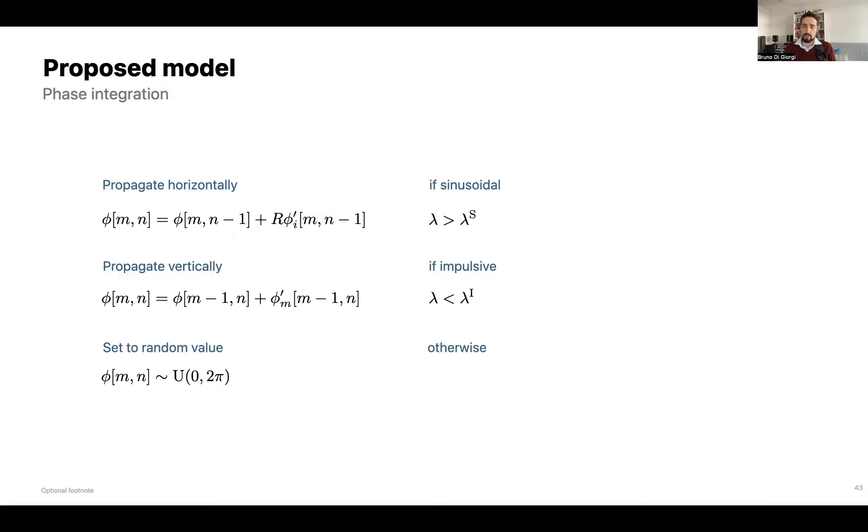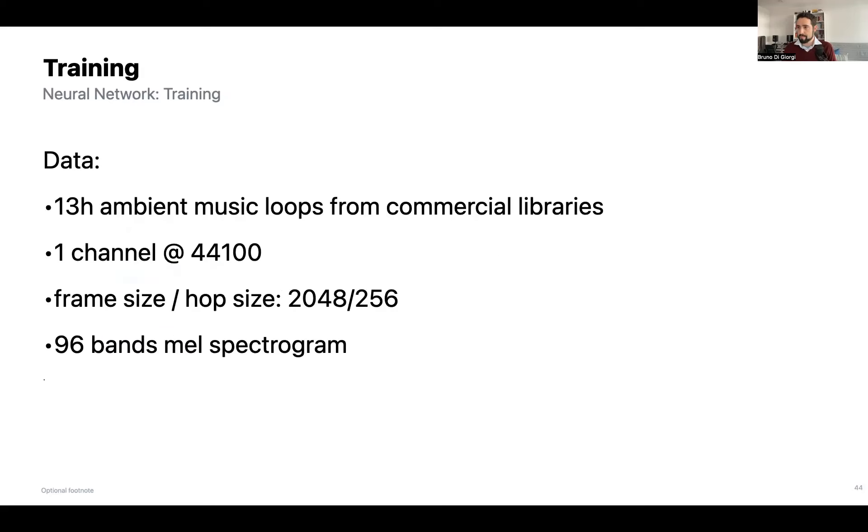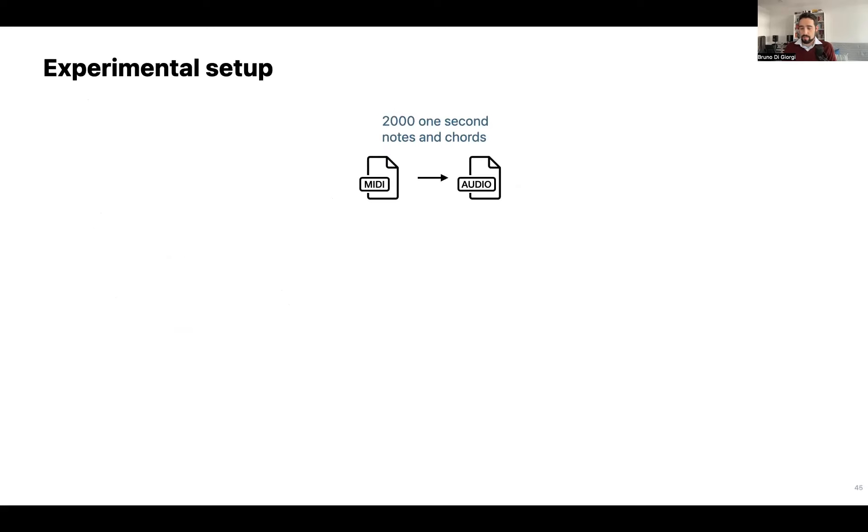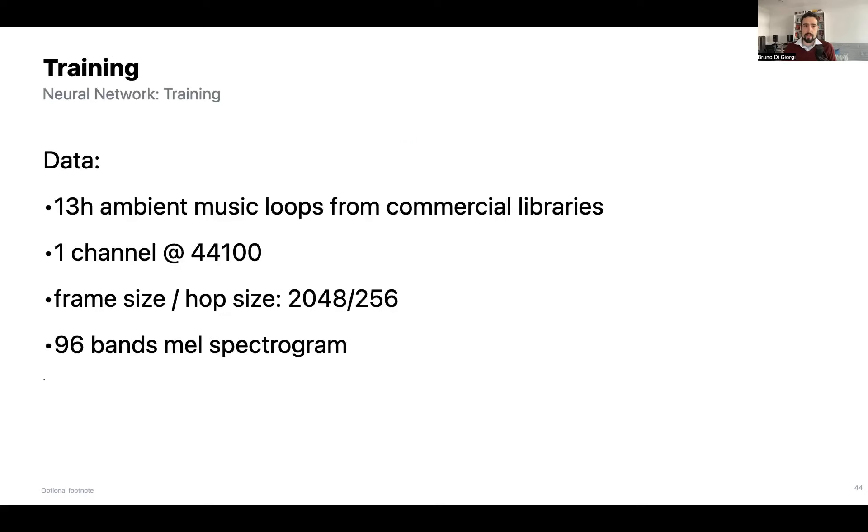We trained our network with 13 hours of ambient music loops from commercial libraries using one channel at 44,100 hertz. We use a frame size of 2048 and hop size of 256, and 96 bands Mel spectrogram. All the models that we compared with were trained with the same data.